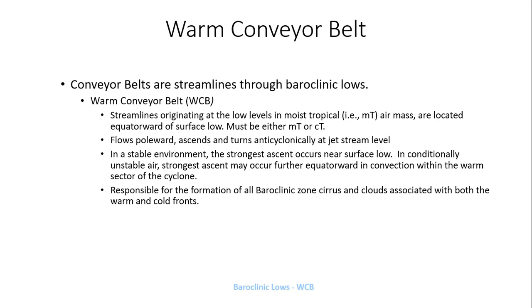However, in conditionally unstable air, the strongest rising air may occur farther equatorward or southward in convection — meaning development of thunderstorms within the warm sector of the cyclone. The warm conveyor belts are also responsible for the formation of all baroclinic zone cirrus clouds, those high wispy ice crystal clouds associated with both the warm and cold fronts.